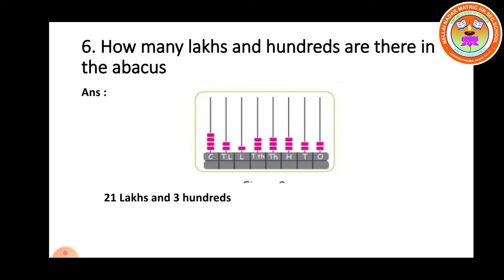How many lakhs and hundreds are there in the abacus? See the given abacus. Ones: 2, tens: 2, hundreds: 3, thousands: 3, 10,000: 3, lakhs: 1, 10 lakhs: 2, crore: 4. They are asking lakhs and hundreds. Lakhs means 10 lakhs and lakhs together: 2 and 1 together is 21. So 21 lakhs and hundreds: 3.